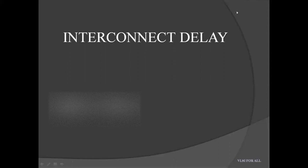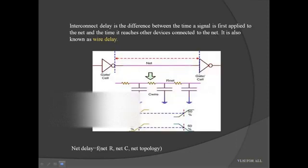Hi everyone. Today we are going to discuss about the interconnect delay. First of all, what is interconnect delay? Interconnect delay is the difference between the time at which the signal is applied at the net and the time at which the signal reaches the device which is connected to the net.